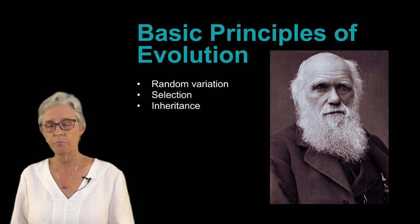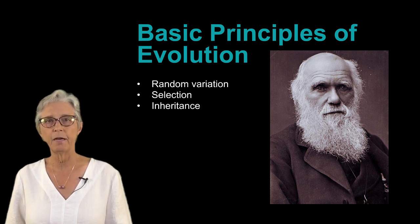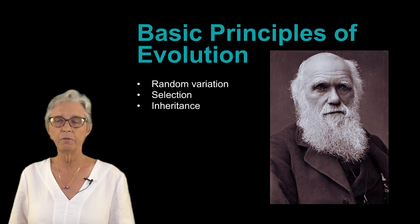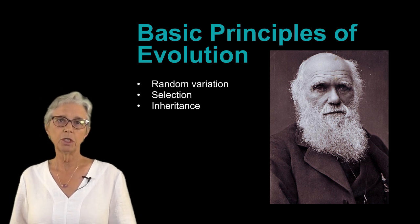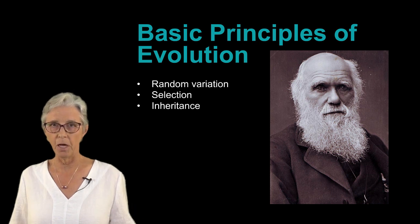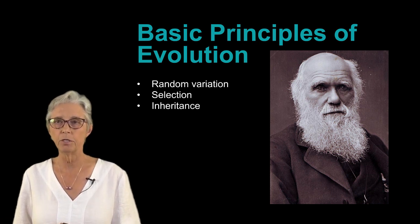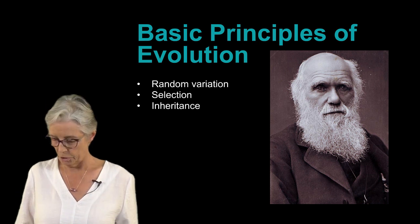Let's first review the three basic elements of Darwinian evolution, which you've already learned about: random variation of individuals, selection of some of those individuals based on differential fitness, and the inheritance of those variations into individuals of the next generation.